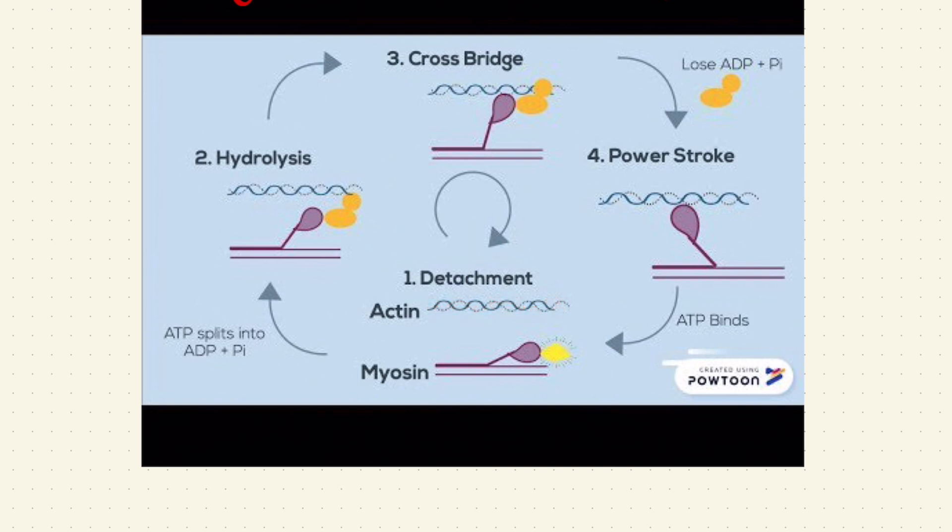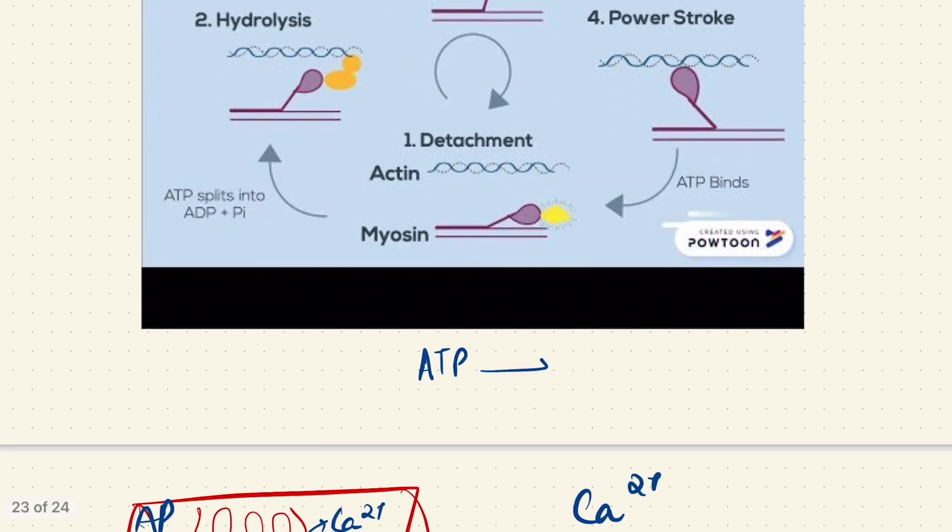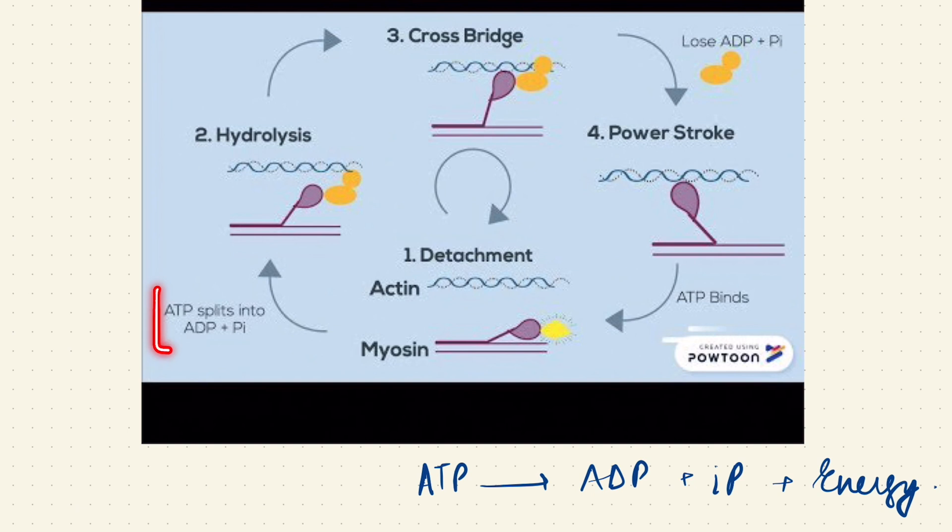Once the calcium releases, acts on troponin C, and unmasks the active sites of actin, now this actin has active sites on it. Now what happens is that here there is a myosin ATPase. I have told you this myosin ATPase acts and causes the hydrolysis of ATP. That is, it breaks down the ATP. Now you know every time an ATP breaks down into ADP and inorganic phosphates, there is liberation of energy. As you can see, the ATP here splits into ADP and inorganic phosphate, and there is liberation of a lot of energy. So the second step is the hydrolysis of ATP.